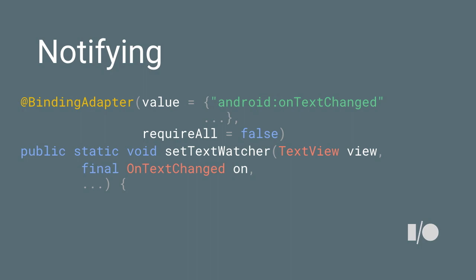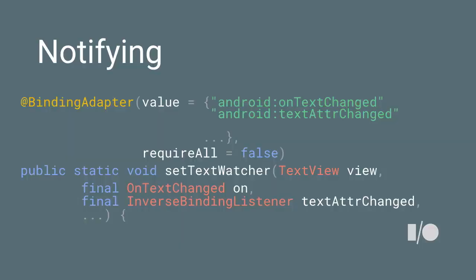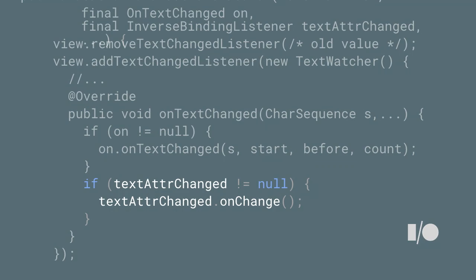We need to get notifications from the TextView, so you'd normally set a TextWatcher. We have these event attributes in the binding adapter — we add this other attribute, the synthetic attribute. Note: you cannot use the synthetic attribute in your layout; if you try, it will throw an error message. You set this in your binding adapter — this is all done for you for all the fields that work. You remove the previous listener, add a new one, and notify only if the listener is not null.